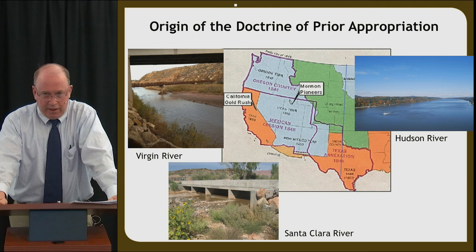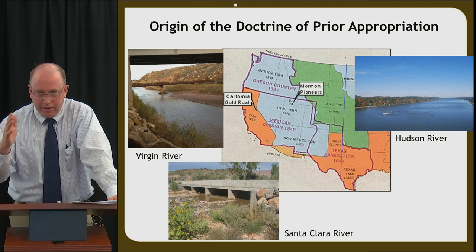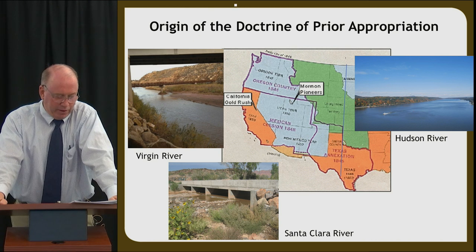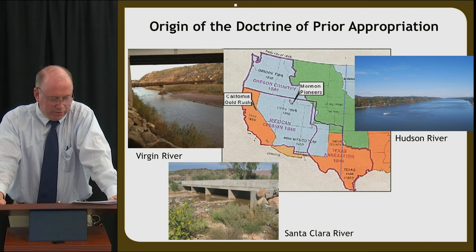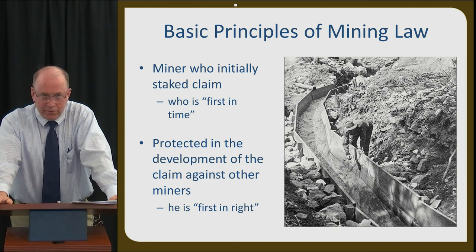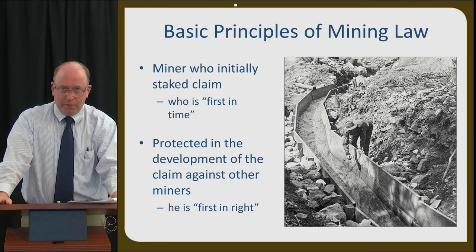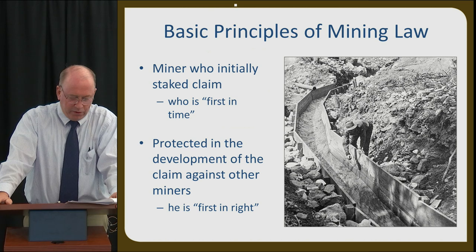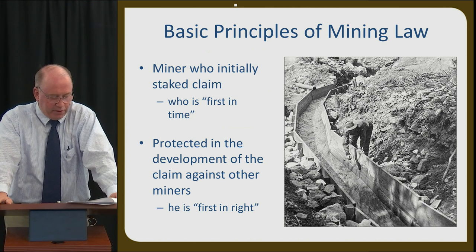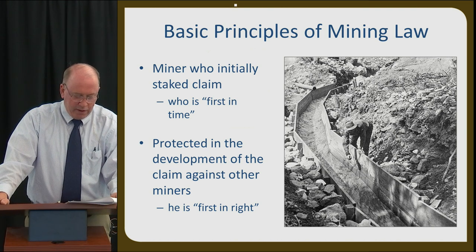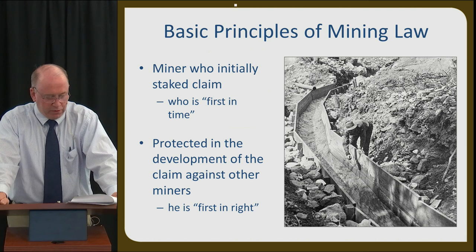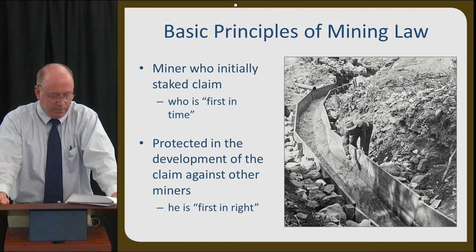The doctrine of prior appropriation is currently used as the foundation of the water rights system in every western state, developed to respond to arid conditions. As we talk about east versus west, it's often delineated by the 100th meridian — that blue line drawn through from Canada through Texas — based on a precipitation of greater than 20 inches per year. The concepts of prior appropriation, which developed in the California mining camp, spread to other western states as mineral discoveries led California miners elsewhere. A basic principle of mining law was that the miner who initially staked a claim — first in time — is protected against other miners. His is first in right. This practice carried over to water use and became recognized as tradition and protected in courts of law.